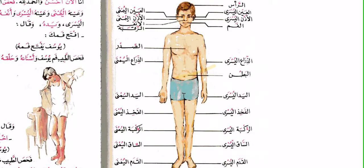Bismillah ar-Rahman ar-Rahim. Lesson number 9, 'At the Doctor's Office,' Part 2. The first thing we have is a diagram teaching us different body parts. First we have الرأس, which is the head — the entire head.